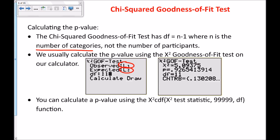The calculator computes observed minus expected squared divided by expected and adds that up for each value in the list, then calculates the p-value. If you're just given the chi-squared test statistic, there is a chi-squared CDF function — found near norm CDF and T CDF. It's always a right-tailed test, so the syntax is: chi-squared test statistic, comma, infinity, comma, degrees of freedom.